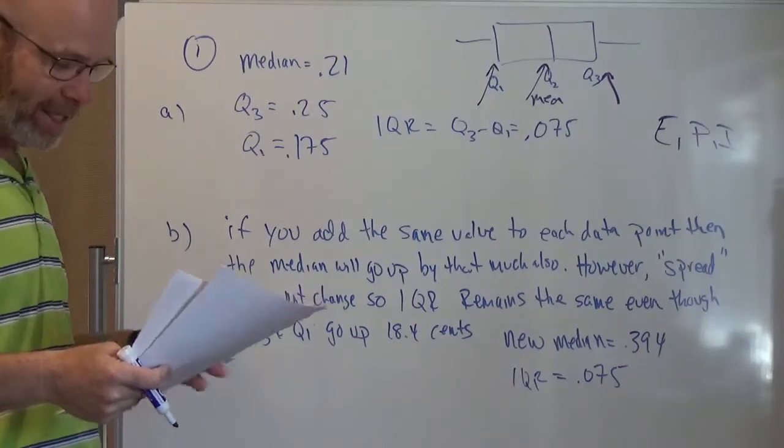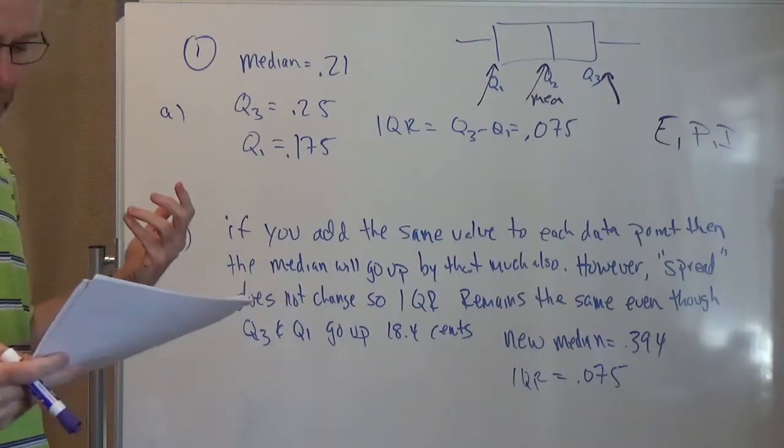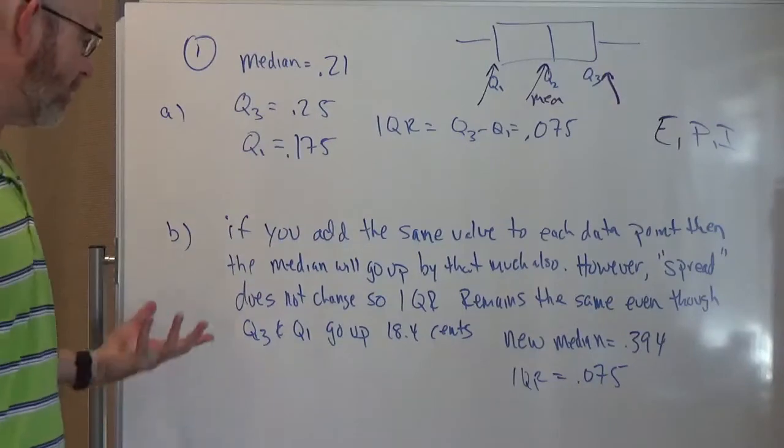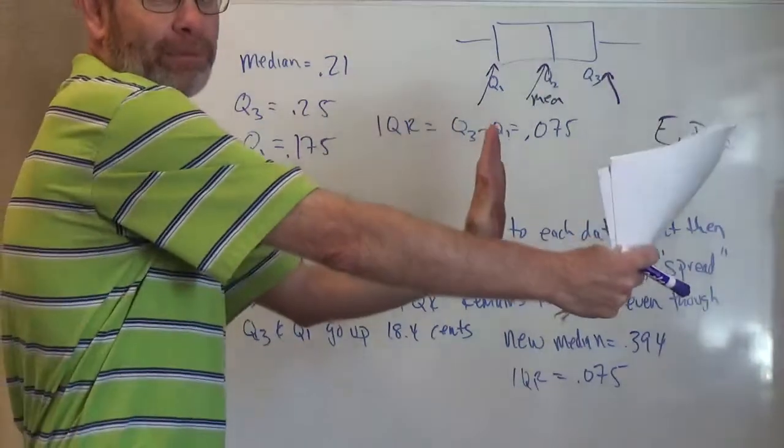Part B says there's also a federal tax imposed on the gas. That's 18.4 cents. What's going to be the new median and new interquartile range? So just remember that if you add the same thing to everything in a data set, you just shift it, right?